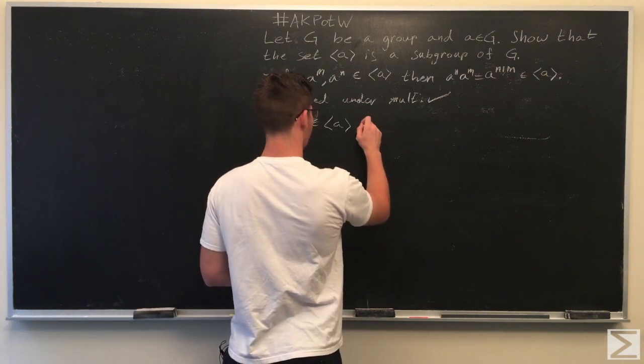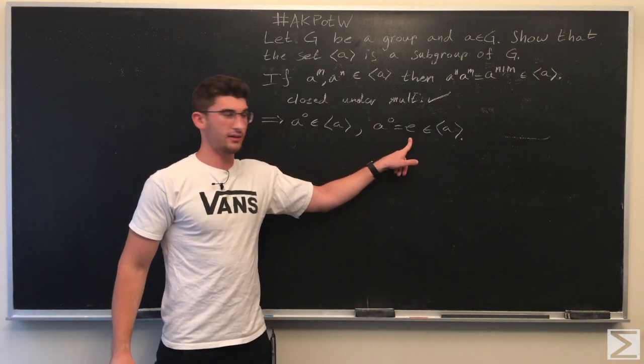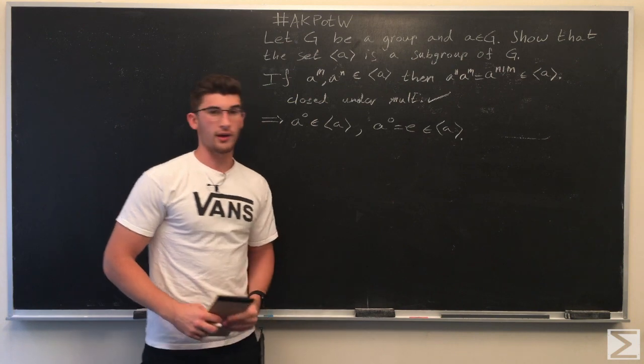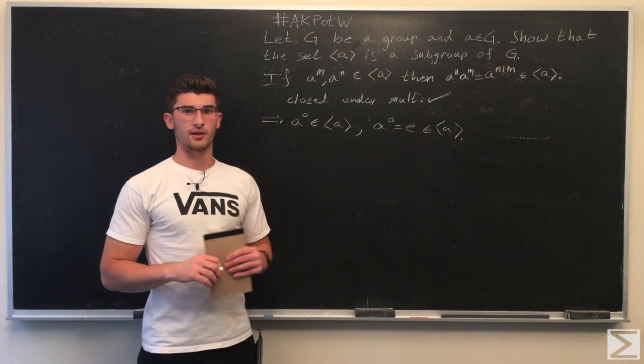And A to the power of 0 is equal to the identity. And therefore, the identity is an element of things generated by A.